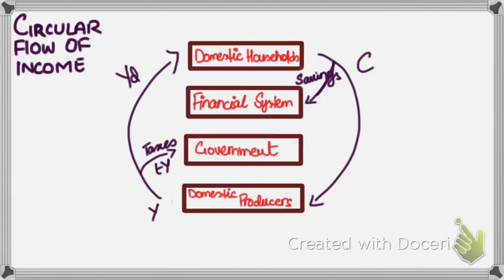So some income is saved by households and another arrow moves out of the circular flow to the financial system — the banks — in the form of savings. The banks use these savings and their reserves to give out loans; they lend money to entrepreneurs to start businesses or invest in stocks and securities. So an arrow joins back into the circular flow, and this is investment. The government's job is not only to collect taxes — they collect taxes for the betterment of society — so the government also promotes producers, encourages startups and businesses. Another arrow joins the circular flow from the government, and this is government expenditure — basically subsidies and grants for startups, training exercises, etc.